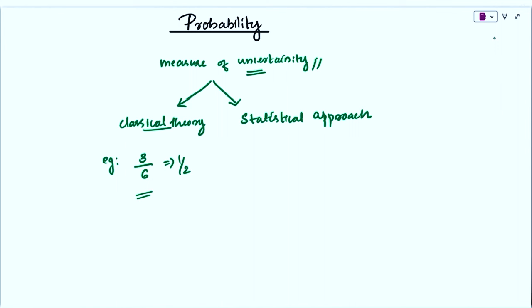But in the statistical approach, to find probability, it is based on observation and collected data. So it is called the statistical approach.